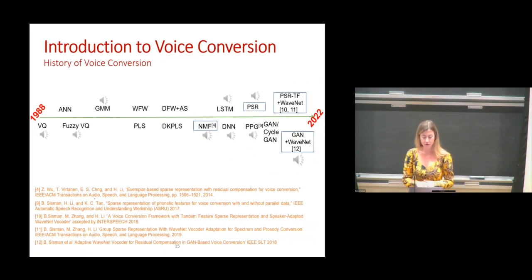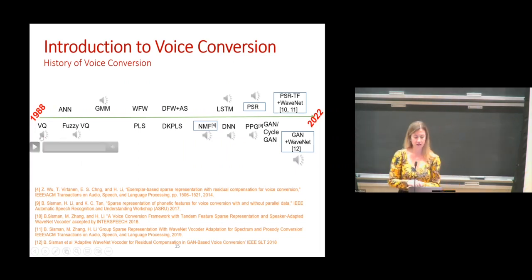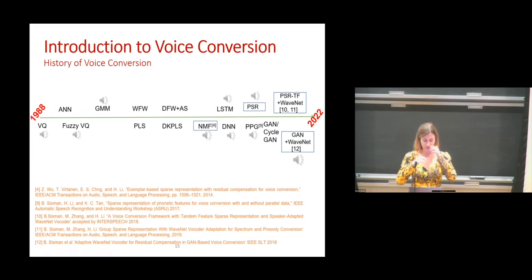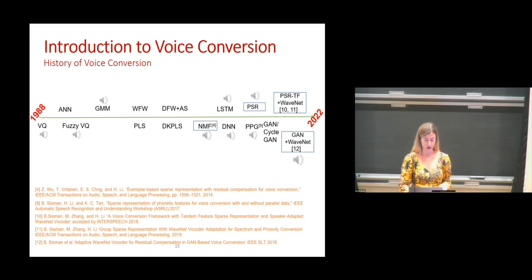When we look at the history of voice conversion, the very first paper was on vector quantization in 1988. It was a basic technique where we do not require large amounts of data — just imagine 30 utterances of three seconds each, like 90 seconds of data from source and 90 seconds from target. That would be enough to train this model — about two minutes of data — without even needing a GPU.